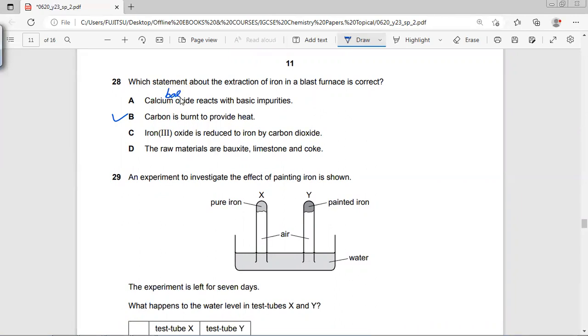Iron oxide is reduced to iron by carbon dioxide? No, it's reduced by carbon monoxide. The raw material bauxite? Bauxite, as you know, contains aluminum.